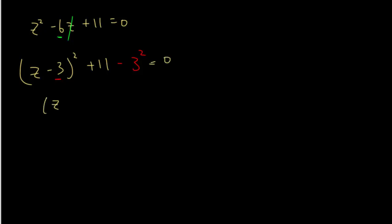So let's do some rearranging and we'll get z minus 3 whole squared equals to negative 2.